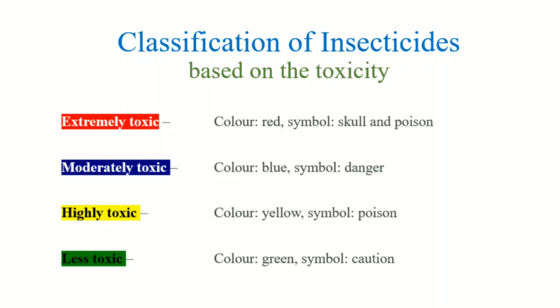Next is classification of insecticides based on toxicity. Extremely toxic: the color is red and the symbol is skull and crossbones. Moderately toxic: the bottle color is blue and the symbol is danger. Highly toxic: the color is yellow and the symbol is poison. Slightly toxic or less toxic: the color is green.